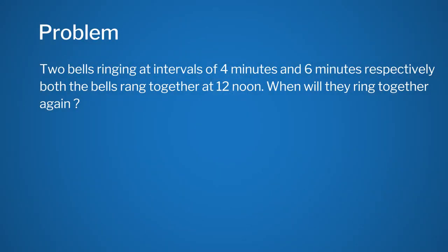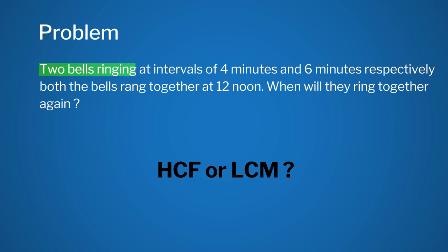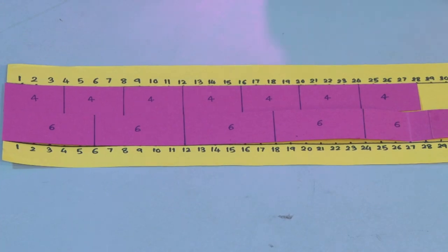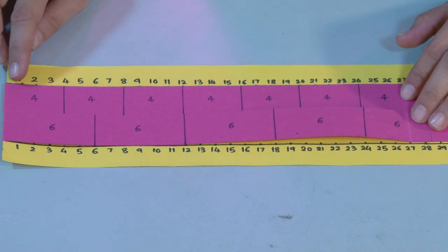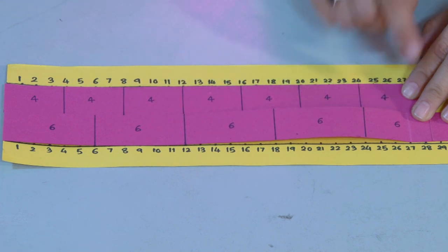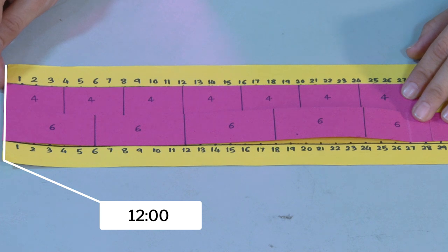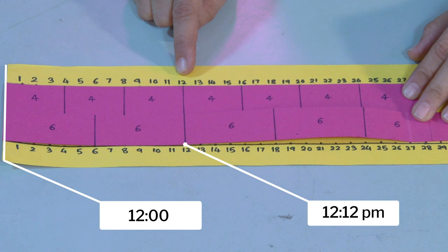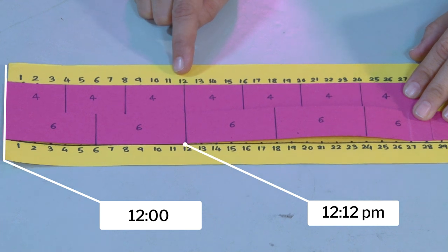Let us look at another problem. Two bells ring at intervals of 4 minutes and 6 minutes respectively. Both bells rang together at 12 noon — when will they ring together again? How to identify whether we need HCF or LCM? Check the action: the bells are ringing repeatedly, there is repetition. So obviously we will have to find the least common multiple of 4 and 6. Using our paper strips, the first bell rings after an interval of 4 minutes and the second bell at an interval of 6 minutes. The coinciding line is at 12, so the bells will ring together 12 minutes past 12 noon, because 12 is the least common multiple of 4 and 6.